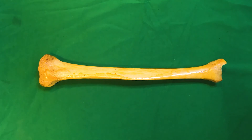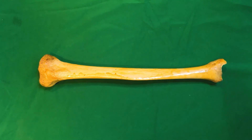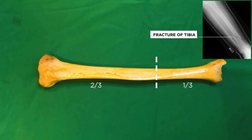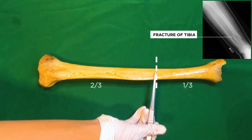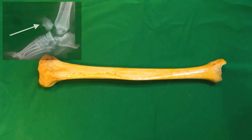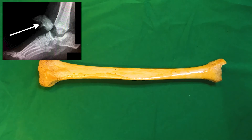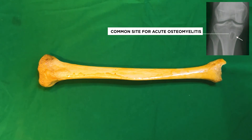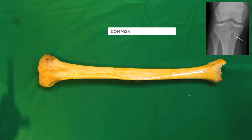Moving on to the clinical anatomy associated with the tibia: the tibia is the most common long bone to be fractured. It is commonly fractured at the junction of the upper two-thirds and the lower one-third because the shaft is most slender here. Forward dislocation of the tibia on the talus is also one of the most common types of injuries of the ankle. The upper end of the tibia is one of the most common sites for acute osteomyelitis.